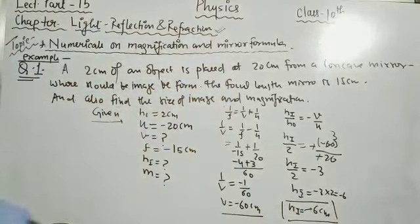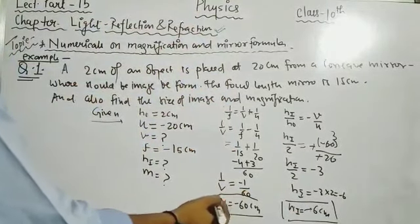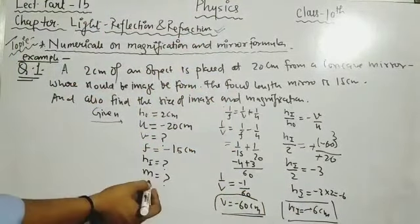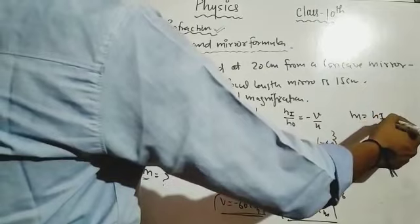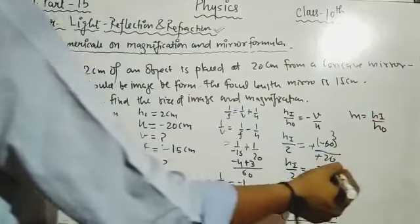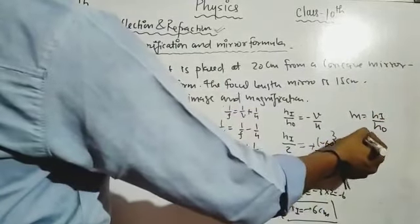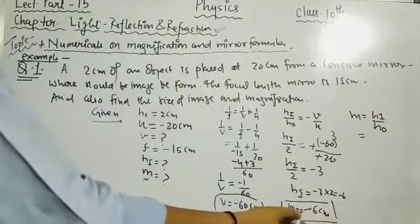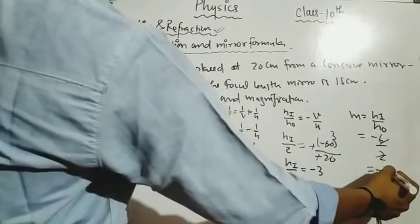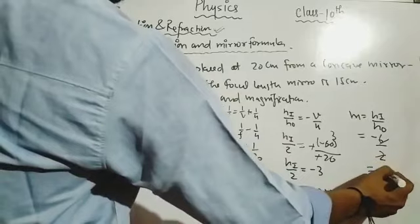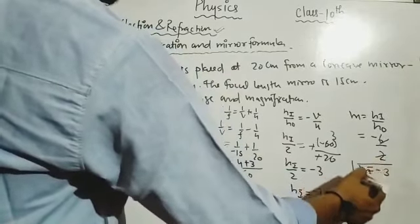The negative value of hi means the image is inverted. The image position is 60 cm from the mirror. Now for magnification: m = hi/h₀ = -6/2 = -3. So magnification is -3. We have found all three required values: image position v = -60 cm, image height hi = -6 cm, and magnification m = -3.